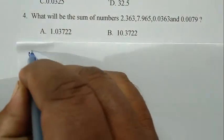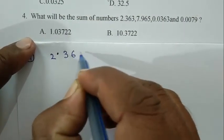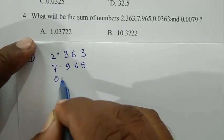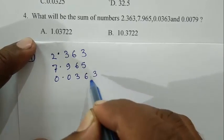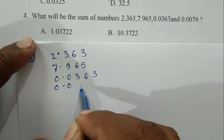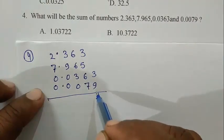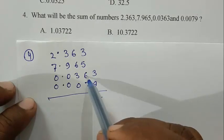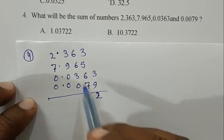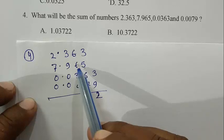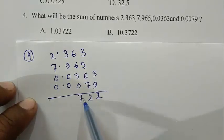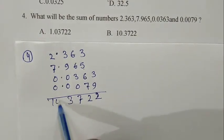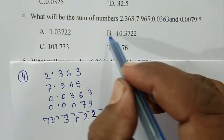Question number 4. That is 2.363, 7.965, 0.0363, 0.0079. Adding: 12, carry 2. Here 1. 8. 14. 15. 22. 2. 8. 14. 17. 7. Carry 1. 3. Carry 1, that's 10. So 10.3722.